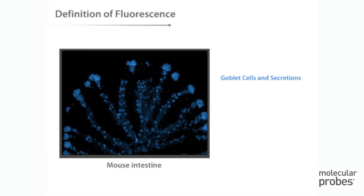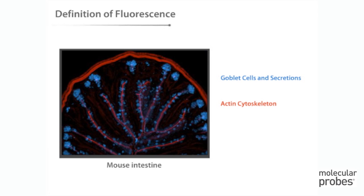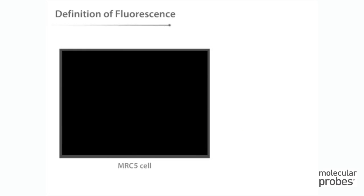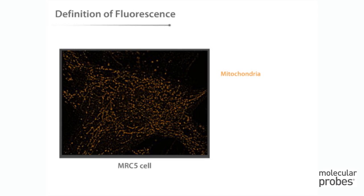Dyes and stains have long been used to detect and visualize structures and processes in biological samples. Today, many of the favored dyes and stains have a fluorescent component, because fluorescent molecules can be detected with extraordinary sensitivity and selectivity.